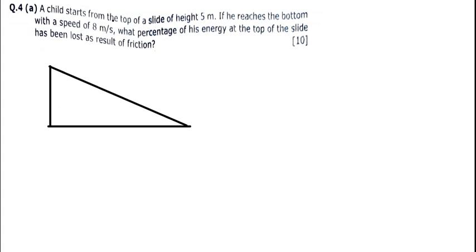The child is here, riding in that direction down the incline. The height we have been told is 5 meters. The velocity at the top — I'll call this point A — and that bottom point will be point B.